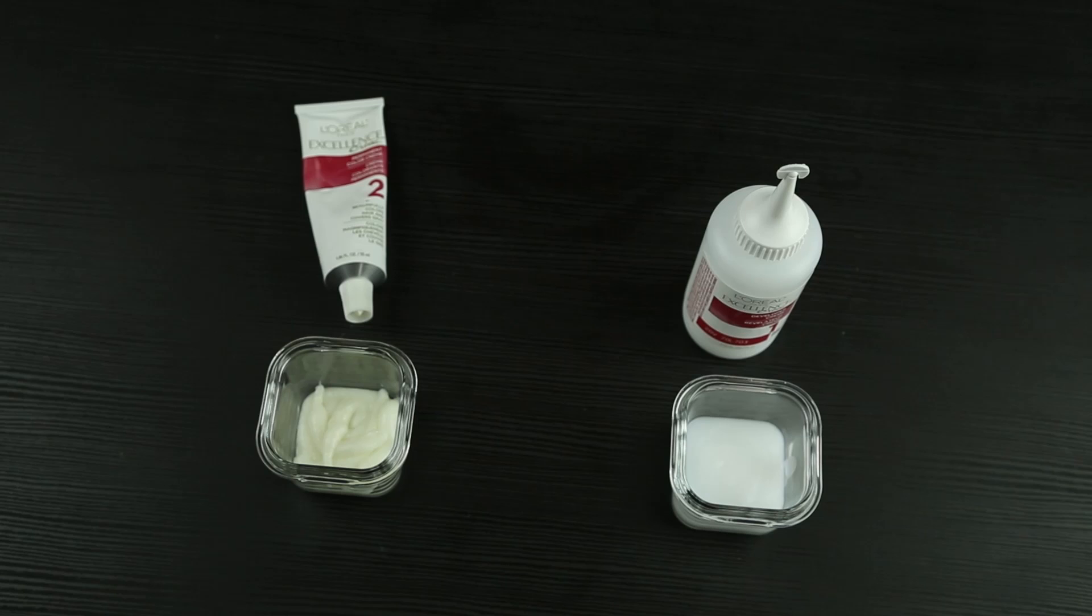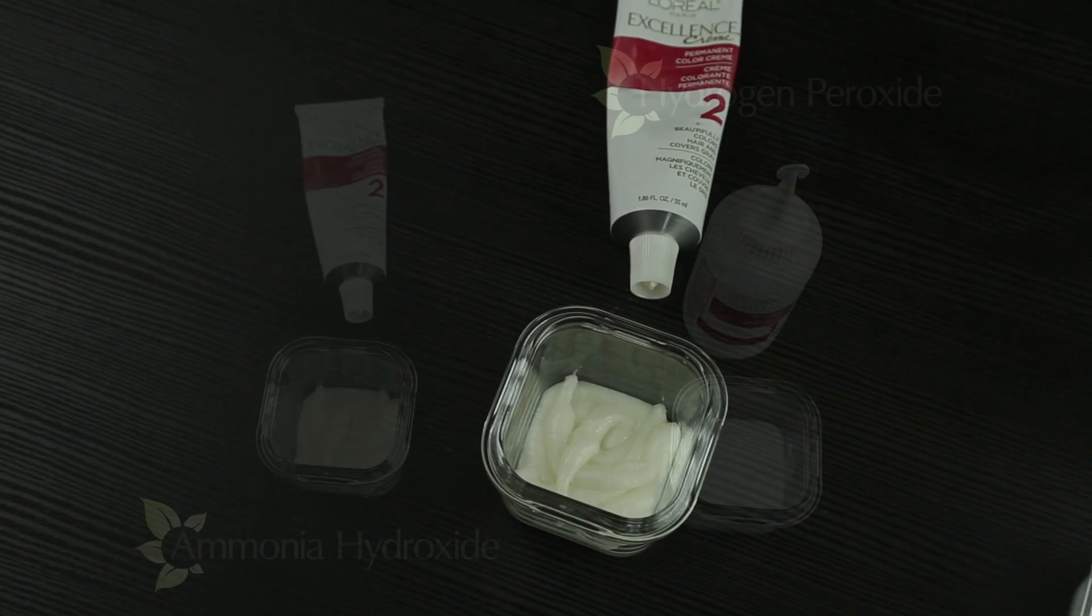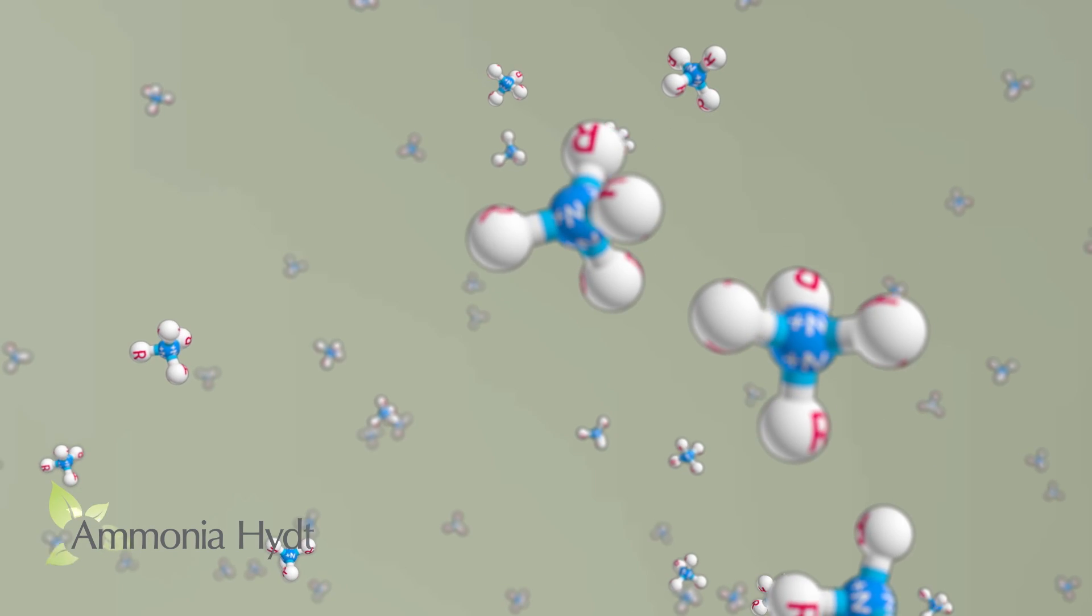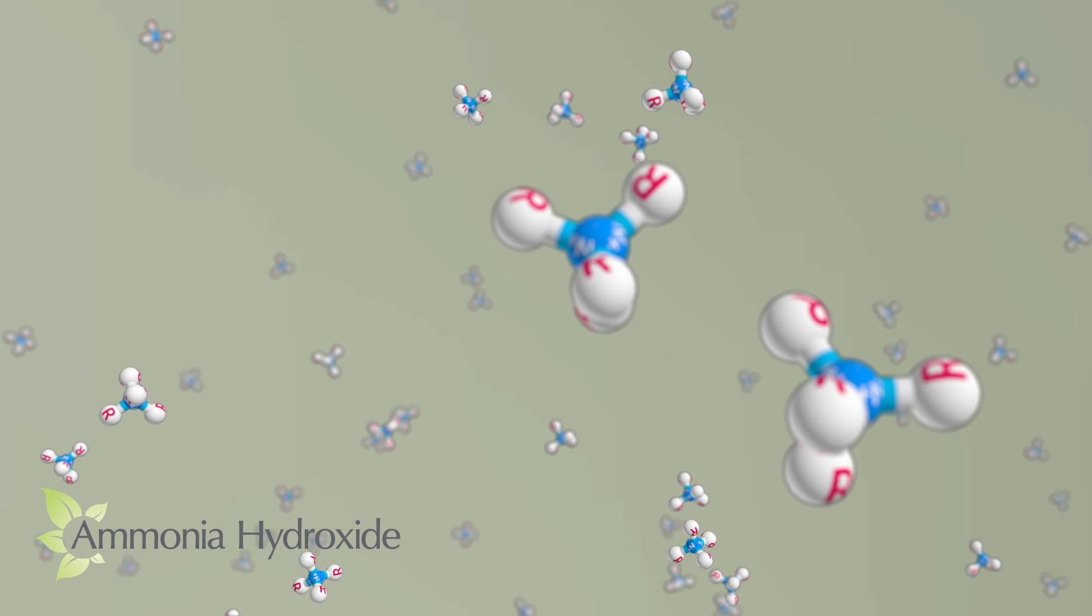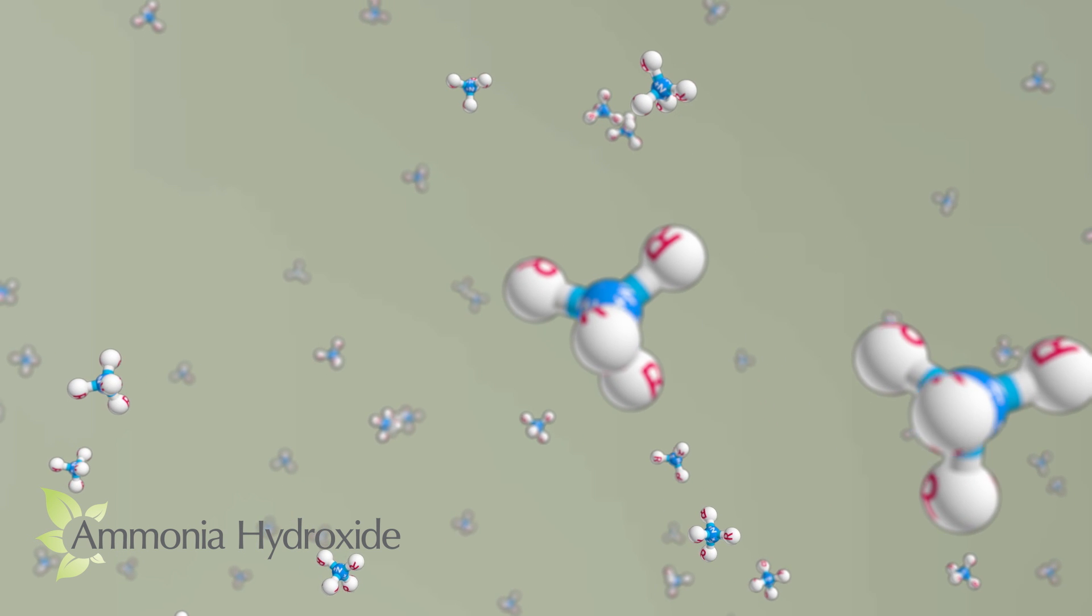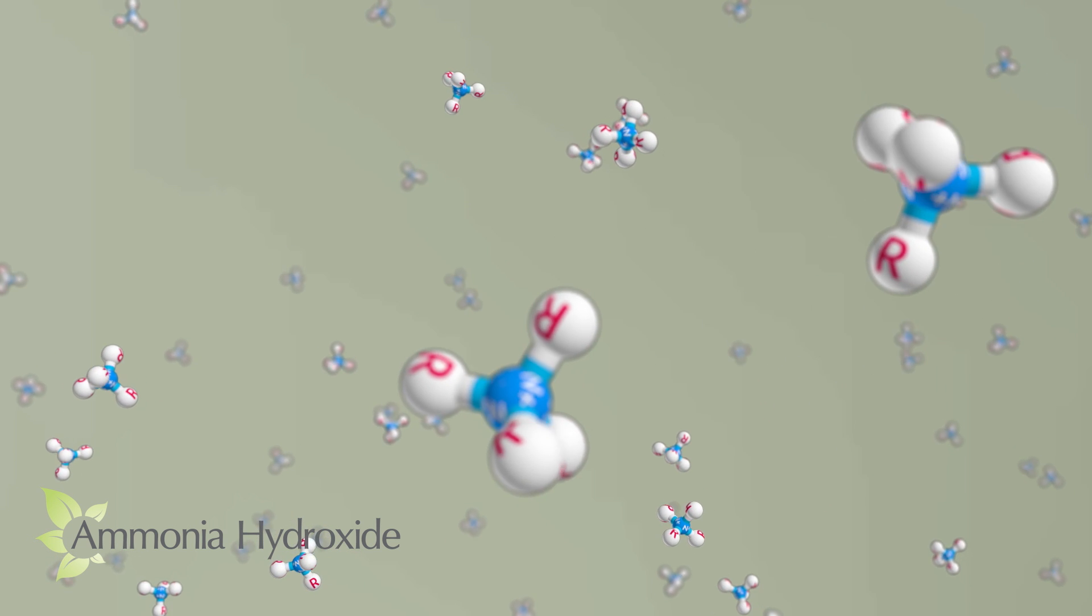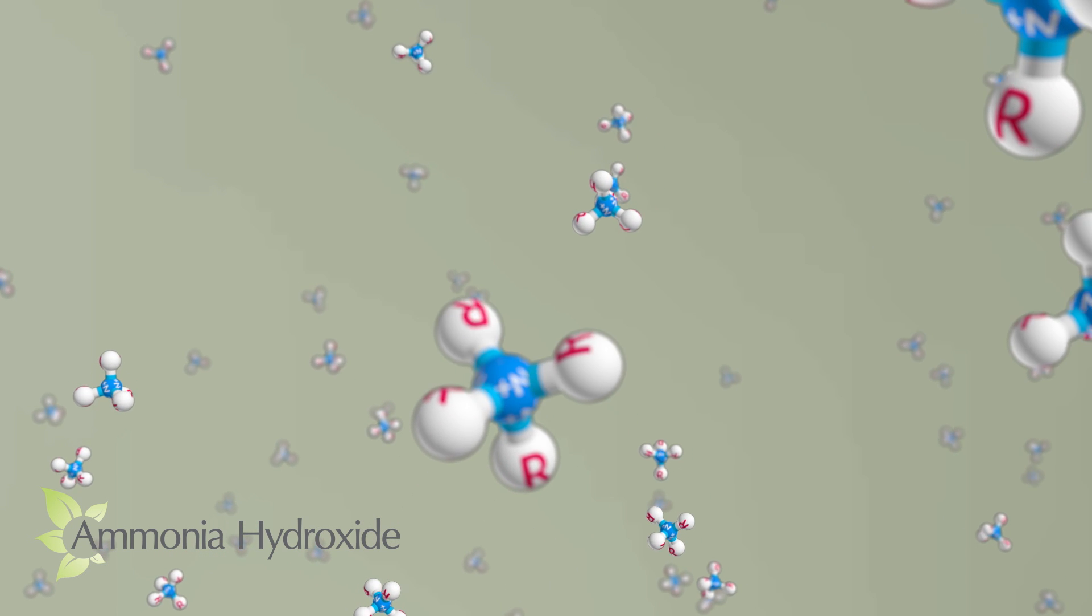Oxidative hair dyes have two main components: ammonia hydroxide and hydrogen peroxide. The ammonia hydroxide has tiny dye chemical molecules called couplers added to it. Coupler molecules are small enough to penetrate the hair shaft.